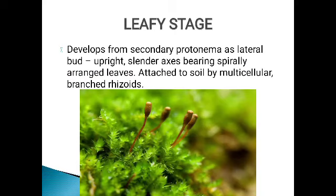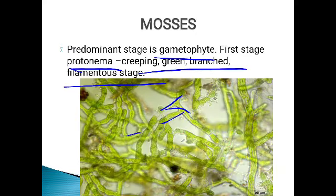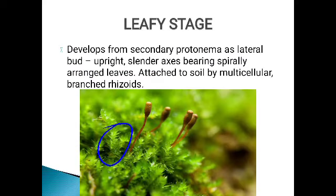The second stage is the leafy stage. You can see the leaf-like structures here. The leafy stage develops from the secondary protonema as a lateral bud. From the primary protonema, many branches arise; from those, as bud-like structures, the secondary protonema develops, and from that only the leafy stage develops.